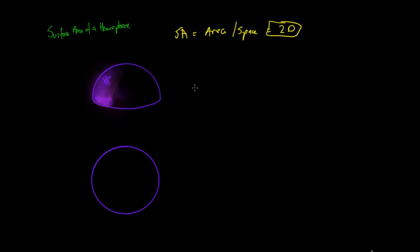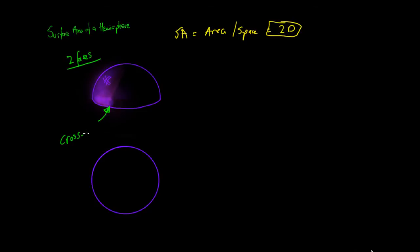We've looked at how to calculate the surface area of a sphere. Now we're going to look at how to calculate the surface area of a hemisphere. A hemisphere is just a sphere which has been chopped in half and it has two faces: the rounded face which used to be the top half of the sphere, and then a new flat part on the bottom — a perfect circle — which we call the cross-sectional area.